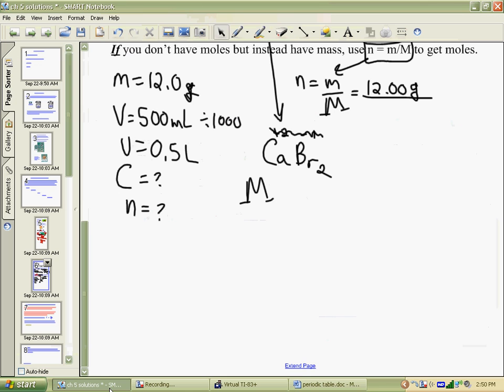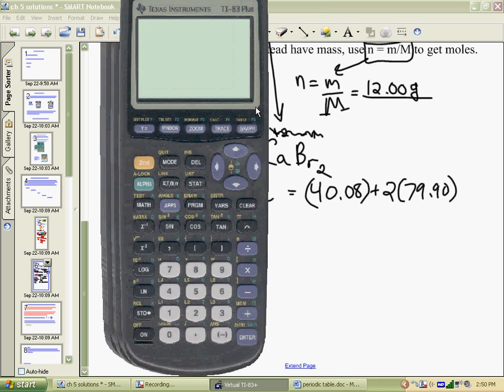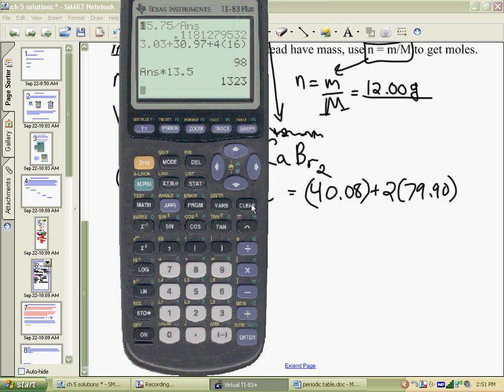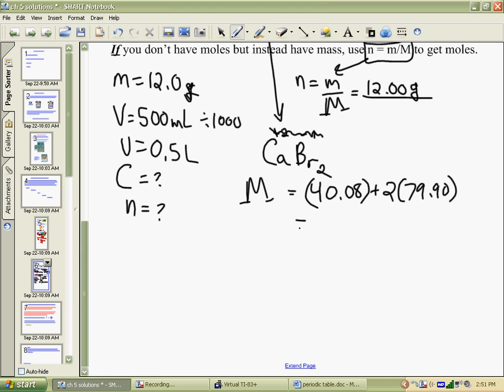So, our calcium was 40.08. And, we have two bromines, which were 79.90. We'll bring up a calculator for this one, although it can be fun to try and figure around with it. We'll turn it on. Clear our last stuff. 40.08, plus two 79.90s, gives us 199.88. That's grams per mole.